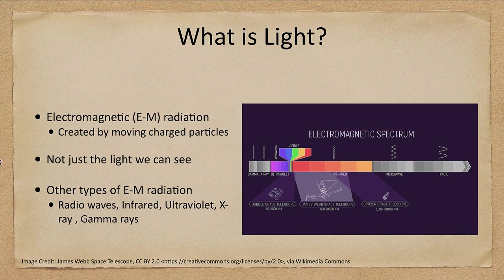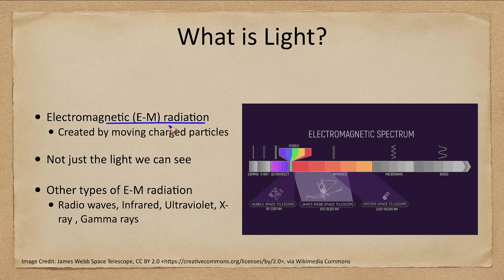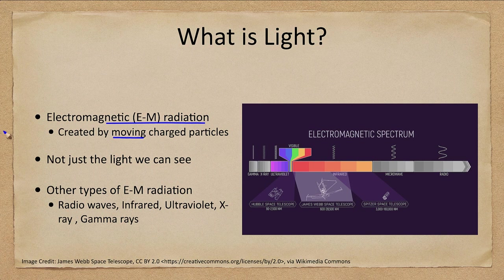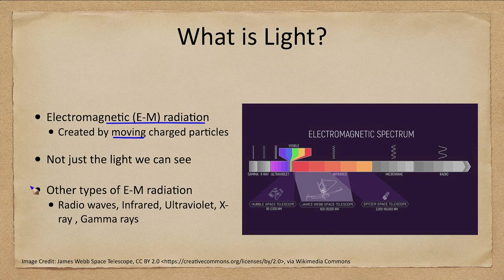So what is light? Light is a form of electromagnetic radiation created by charged particles which are moving. Now, when I say light, you tend to think of visible light, what you see with your eyes. However, true light is actually a lot more than this.